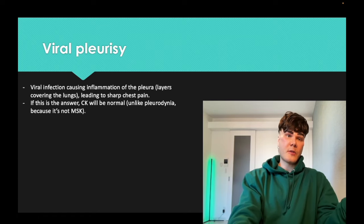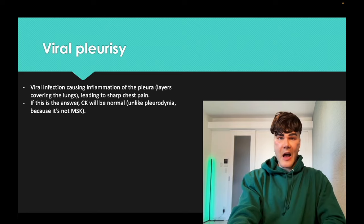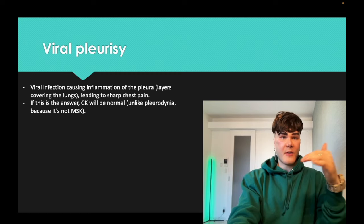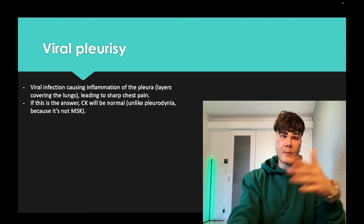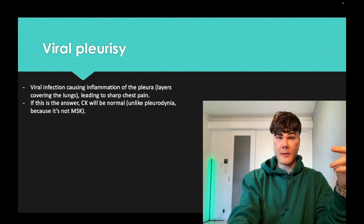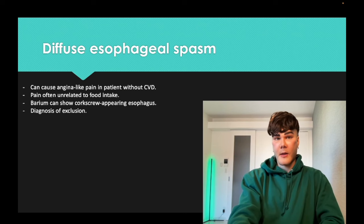At 2CK level, a vignette might just say a 30-year-old has sharp lateral chest pain with no other information — not pericarditis, not pleural effusion, not tamponade — and the answer is viral pleurisy. Diffuse esophageal spasm can present similarly to angina but without cardiovascular disease. The pain may or may not be related to food intake; barium can show a corkscrew appearance, but it's a diagnosis of exclusion once cardiac causes are ruled out.